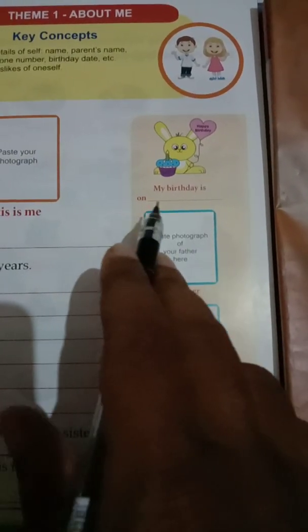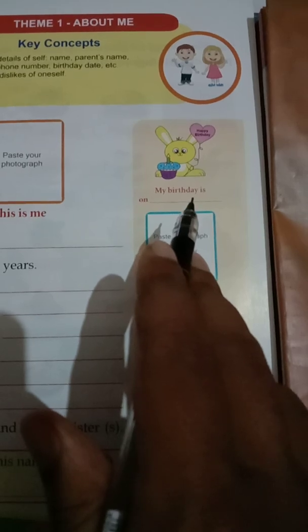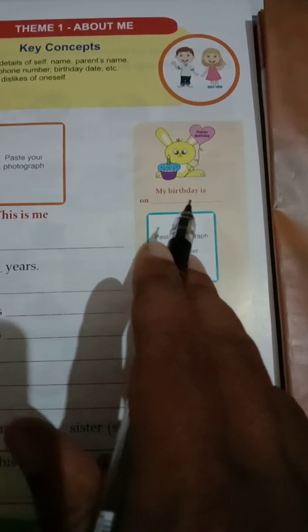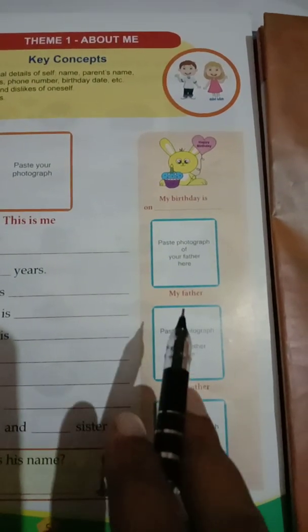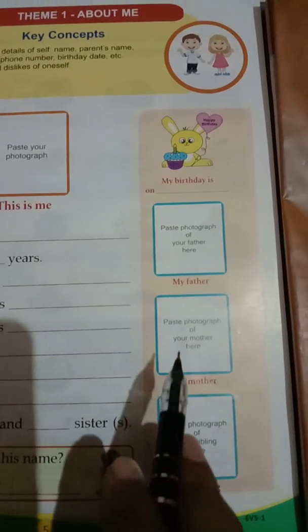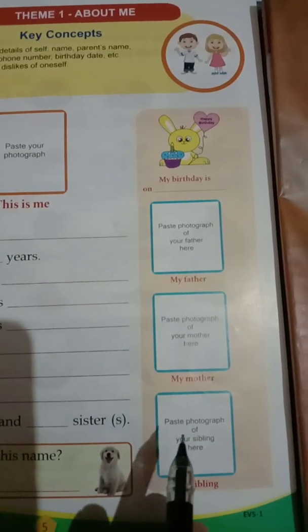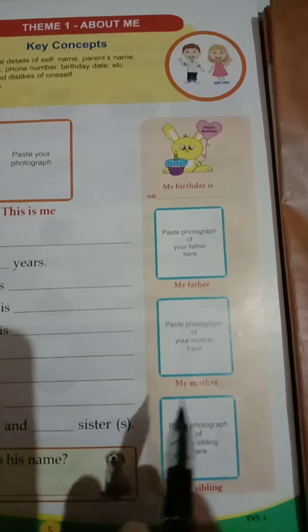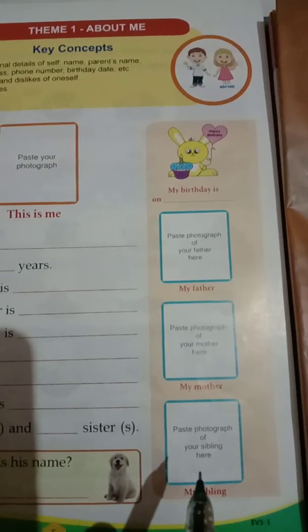My birthday is on... — you have to write your birthday date, like 5th July 1998. Like this you can write in this column. Paste the photograph of your mother here — you have to paste your mother's passport size photograph. The third column is paste photograph of your sibling — your brother or sister's photograph you have to paste here.